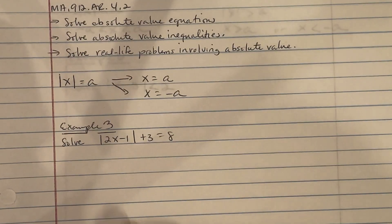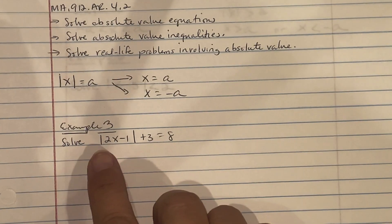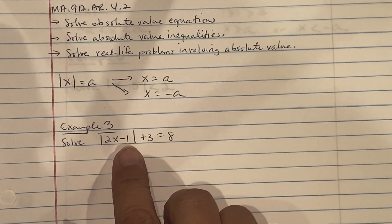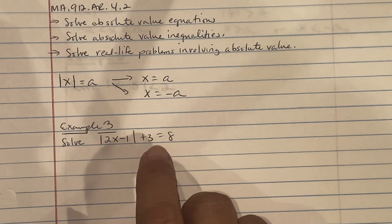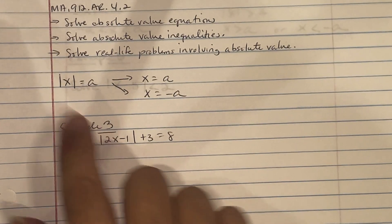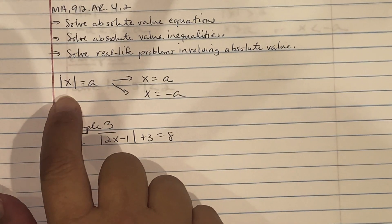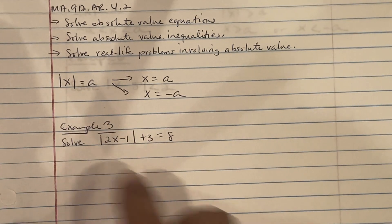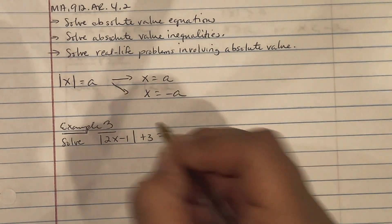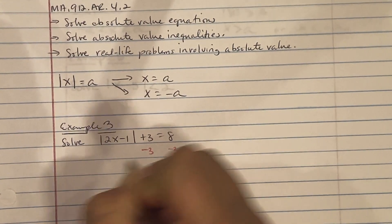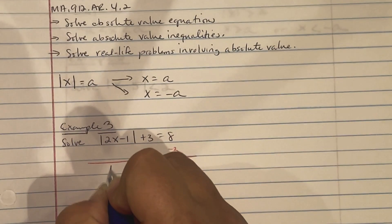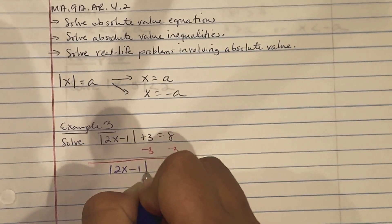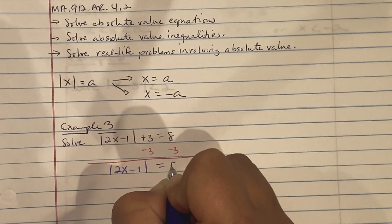Looking at Example 3: solve the absolute value of 2x minus 1, plus 3, equals 8. The first thing we need to do is isolate the absolute value expression. So we subtract 3 from both sides, giving us the absolute value of 2x minus 1 equals 5.